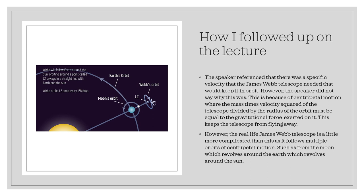How I followed up on the lecture: The speaker referenced that there was a specific velocity that the James Webb Telescope needed that would keep it in orbit. However, the speaker did not say why this was. This is because of centripetal motion, where the mass times velocity squared of the telescope divided by the radius of the orbit must be equal to the gravitational force exerted on it. This keeps the telescope from flying away.